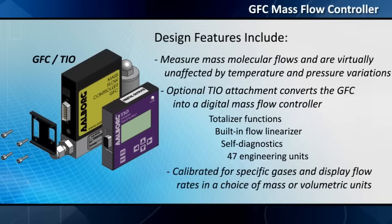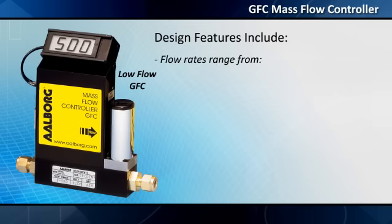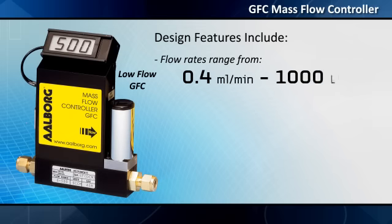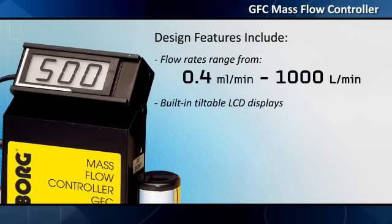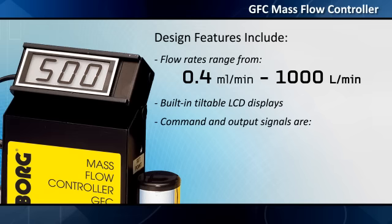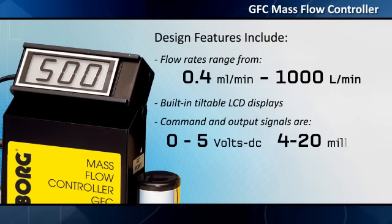Flow rates range from 0.4 milliliters per minute to 1,000 liters per minute. Built-in tiltable LCD displays are included. Command and output signals are 0 to 5 volts DC and 4–20 milliamps.